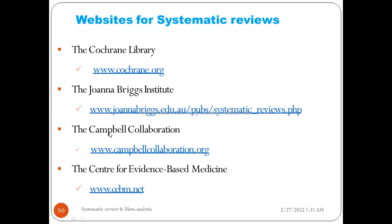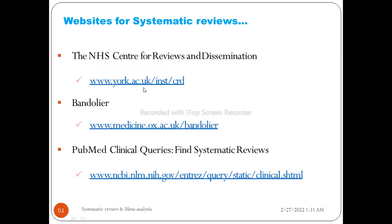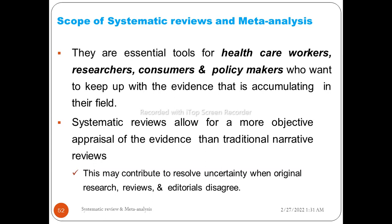Key websites for systematic review include: the Cochrane Library, the Joanna Briggs Institute, the Campbell Collaboration, the Centre for Evidence-Based Medicine, and the NHS Centre for Reviews and Dissemination. PubMed clinical queries can also be used to find systematic reviews. The scope of systematic review and meta-analysis: they are essential tools for healthcare workers, researchers, consumers, and policymakers who want to keep up with accumulating evidence in the field.